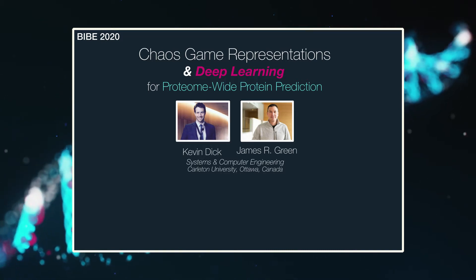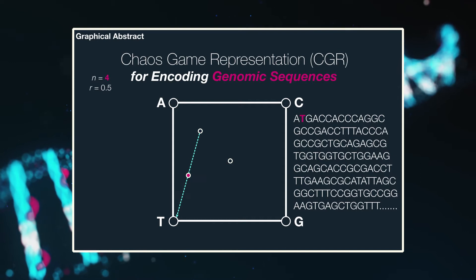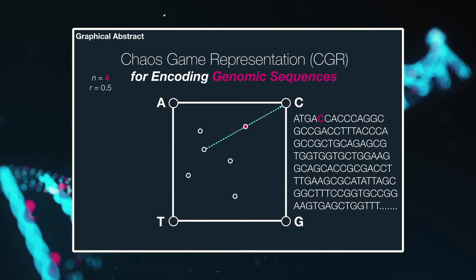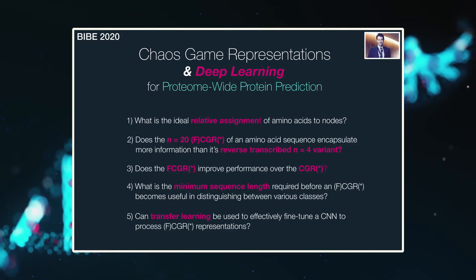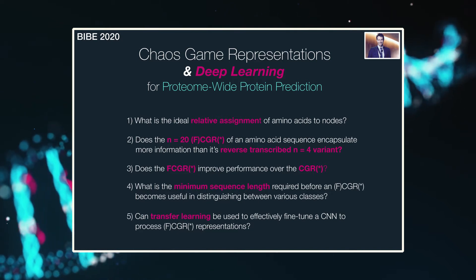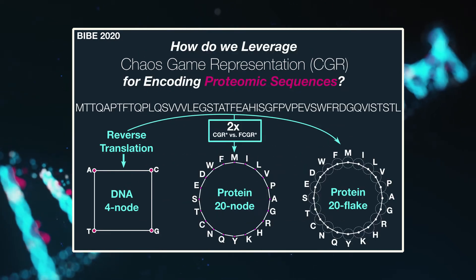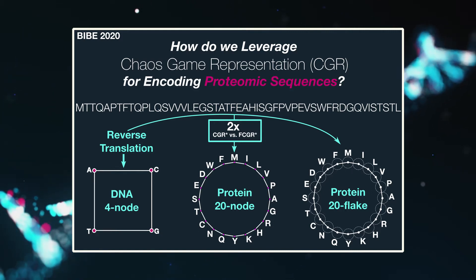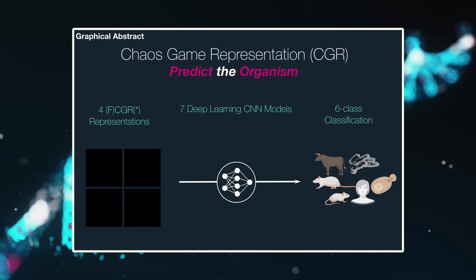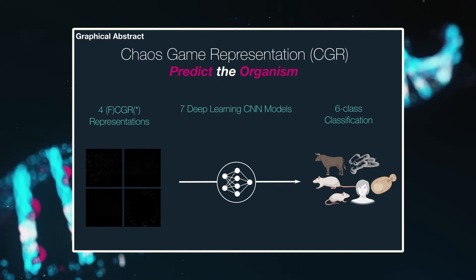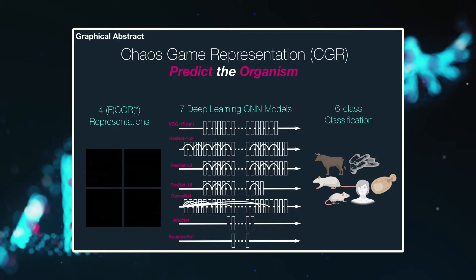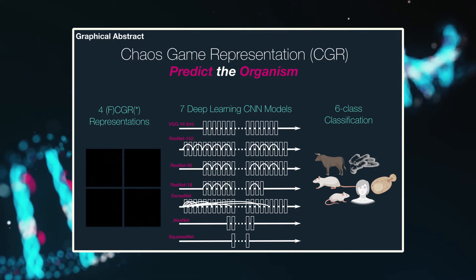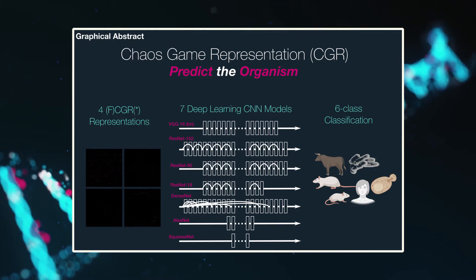Briefly put, this work explores effective ways to use Chaos Game Representations, or CGRs, given that they are an emerging means of visualizing and representing genomic and proteomic sequences. There currently exist many open questions related to their effective application to various computational tasks, and in this work we begin to address some of these questions by comparing four variants of the Chaos Game to generate CGR imagery as part of a multi-class classification task to identify the source organism for a given protein at the proteome-wide level. We propose a novel nodal configuration for icosagon and 20-flake CGRs, and by using two different datasets we perform fine-tuning using seven deep convolutional neural network architectures, reporting modest performance over random using 56 different test conditions.